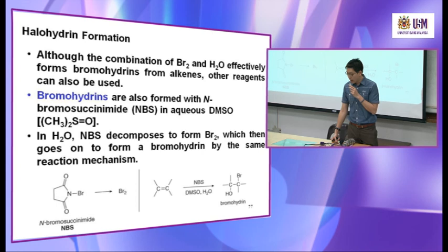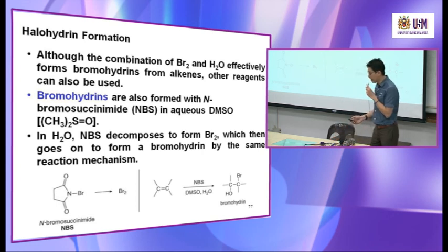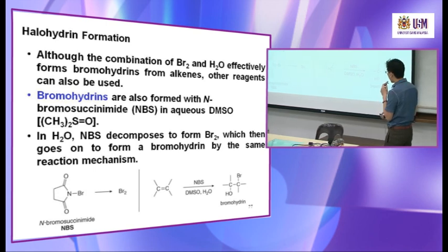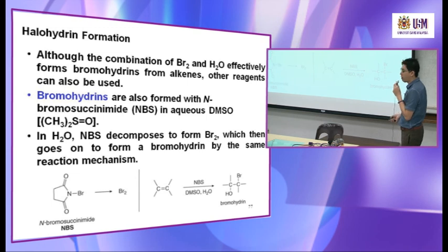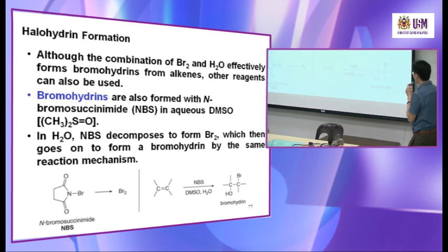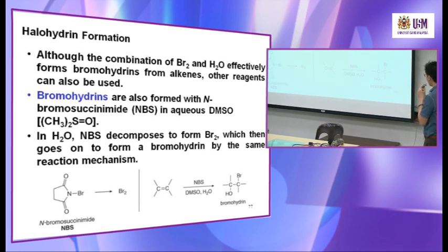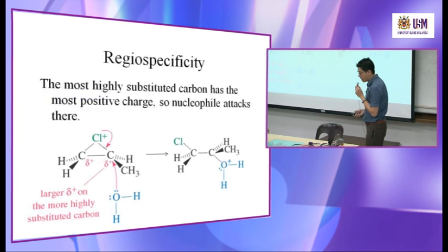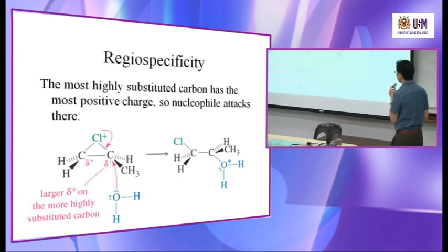Bromohydrins are also formed using NBS (N-bromosuccinimide) in aqueous DMSO. In your exam, you may be given the short form: alkene reacts with NBS in aqueous DMSO, and you are asked for the product. The product is a bromohydrin — you get a C–Br bond and an OH group.